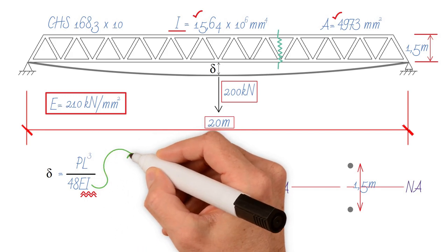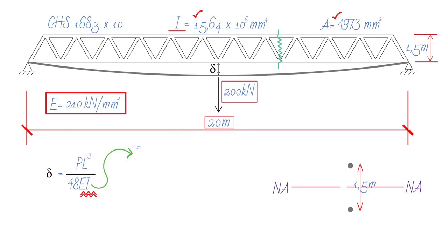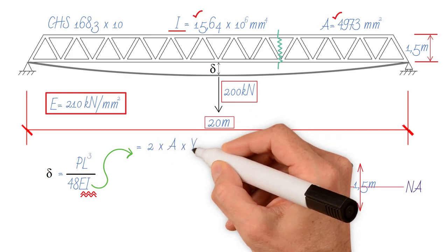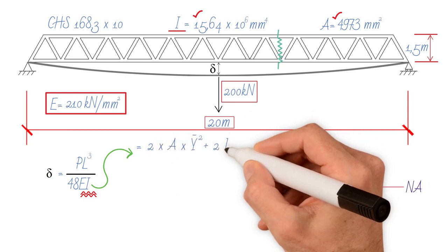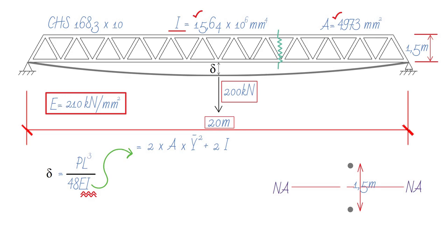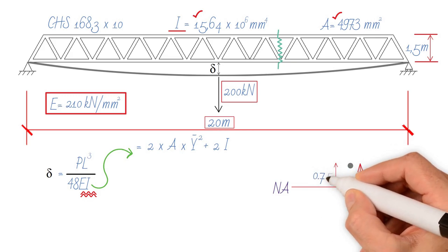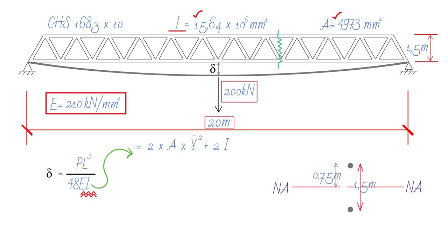I of the entire system is equal to the rotation around the neutral axis. So we got 2 times A times Y bar squared plus 2 I local which we already have given. The value of Y bar is half the depth of truss, which is half of 1.5 meters.